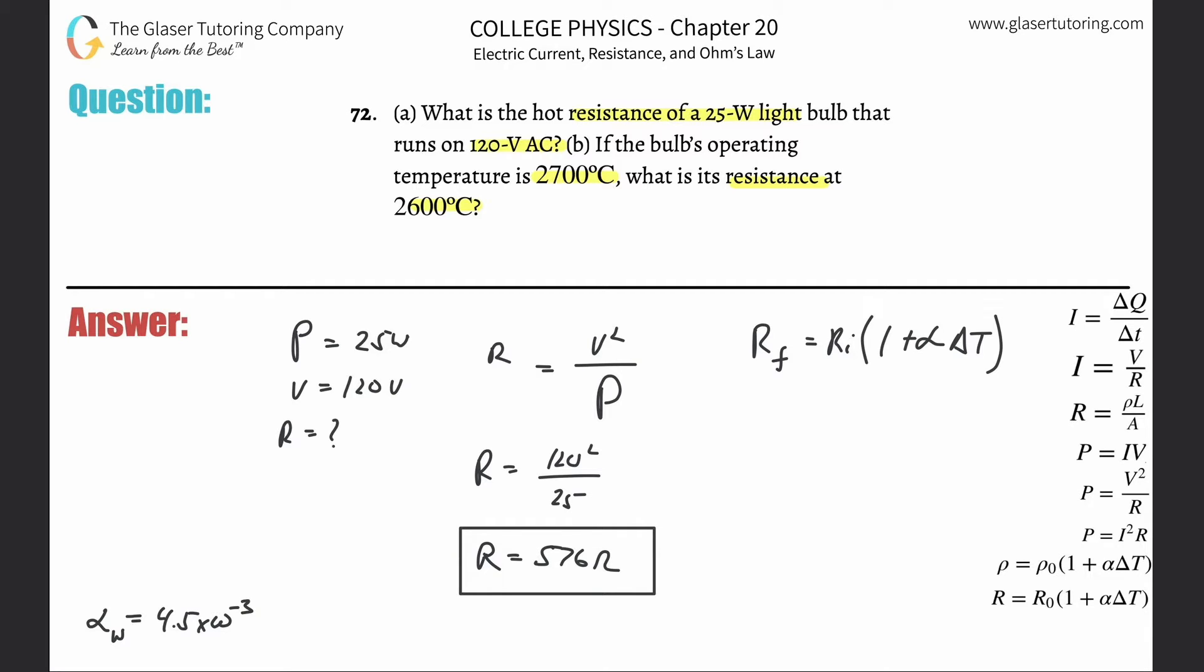It says, if the bulb's operating temperature is 2700 degrees Celsius, what is its resistance at 2600? In other words, this resistance that we just calculated is at 2700 degrees Celsius.